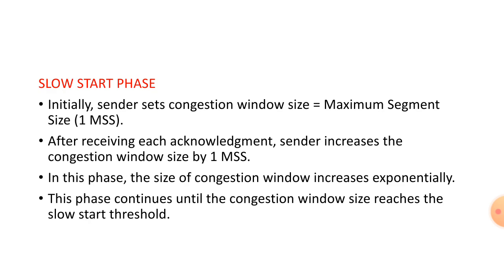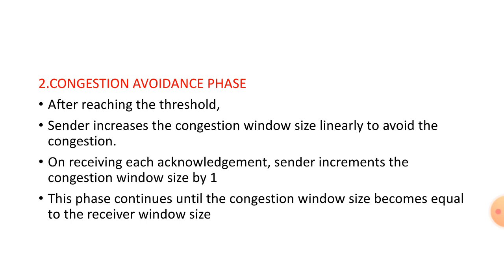In the slow start phase, the congestion window size increases exponentially — starting from 1, 2, 4, and so on. It increases exponentially until the congestion window size reaches the slow start threshold. After reaching the threshold, the sender increments the congestion window size by 1. This phase lasts until the congestion window size becomes equal to the receive window size.